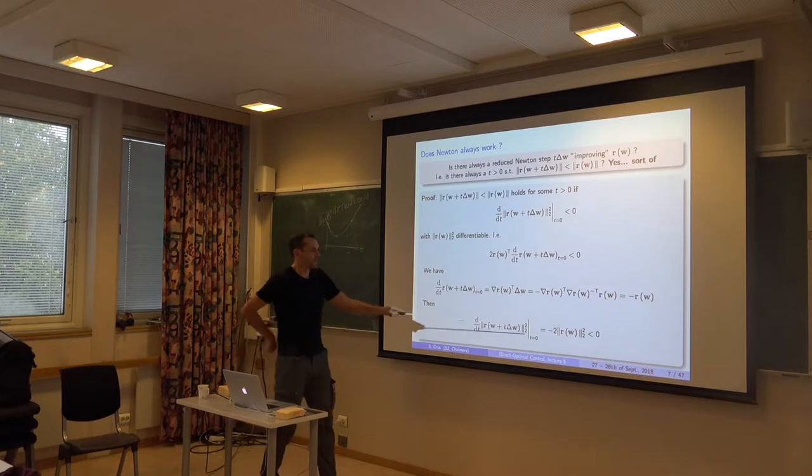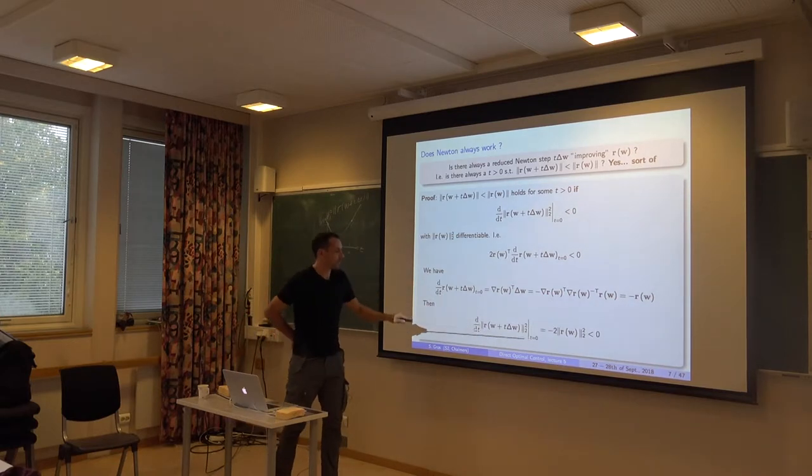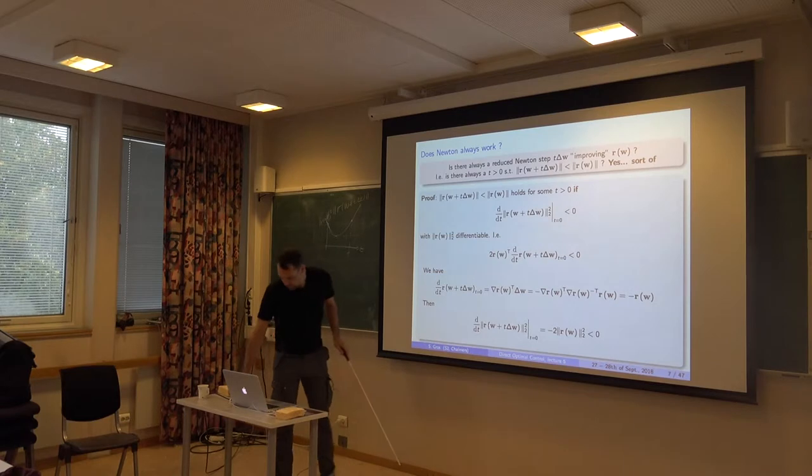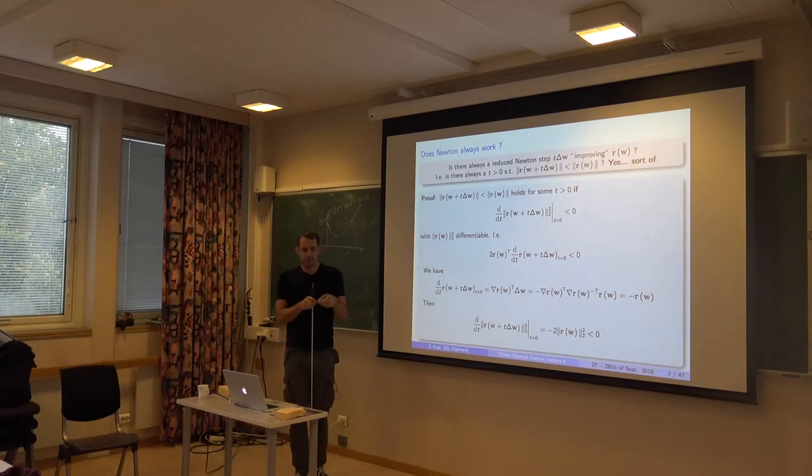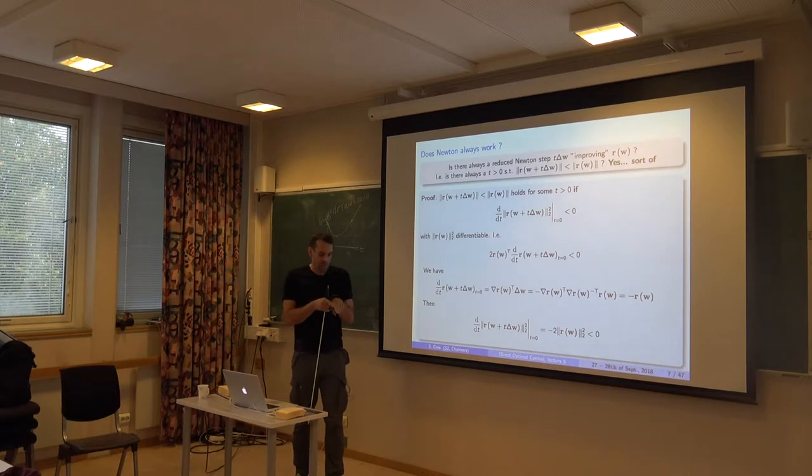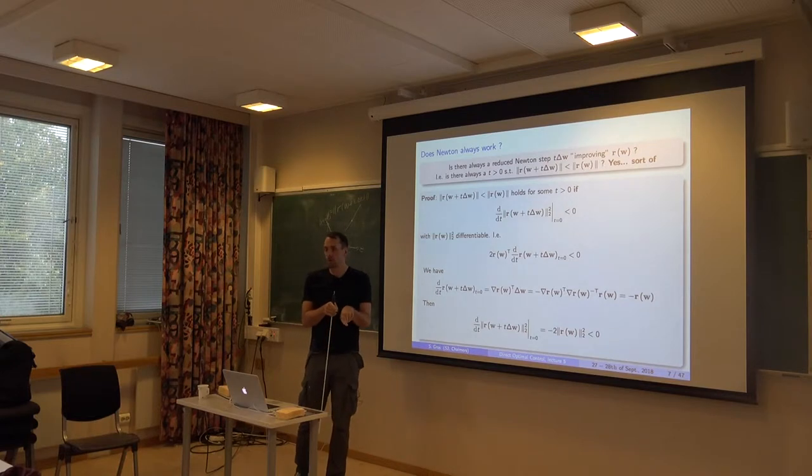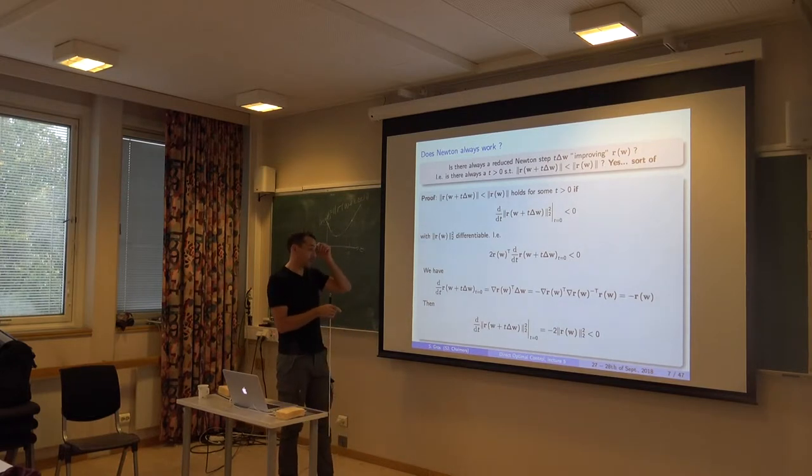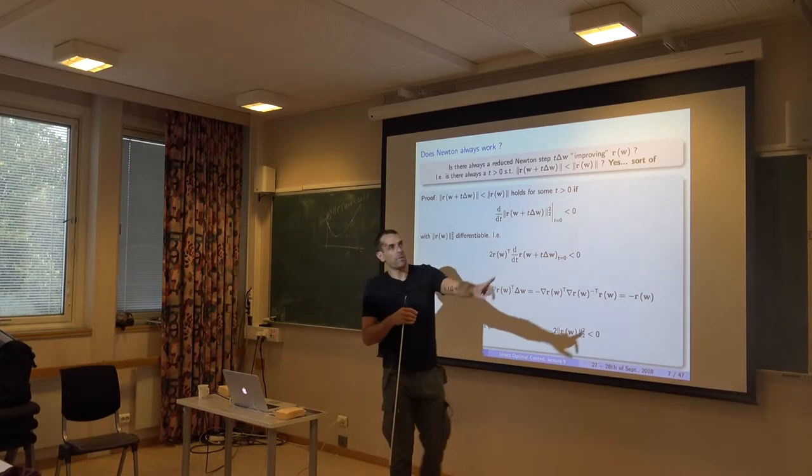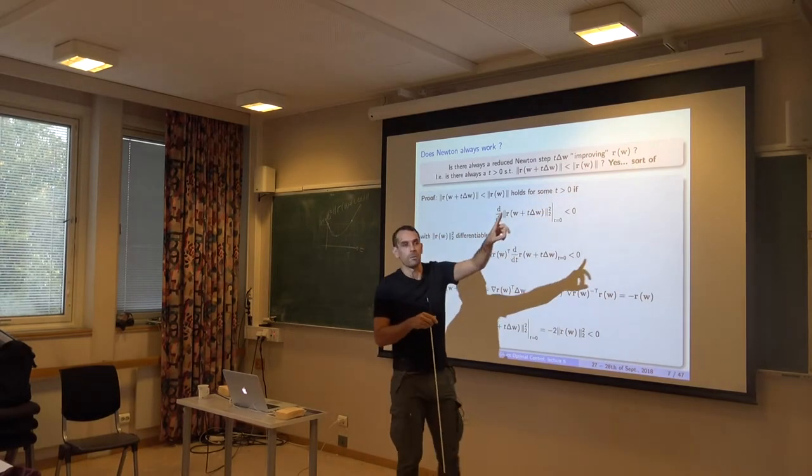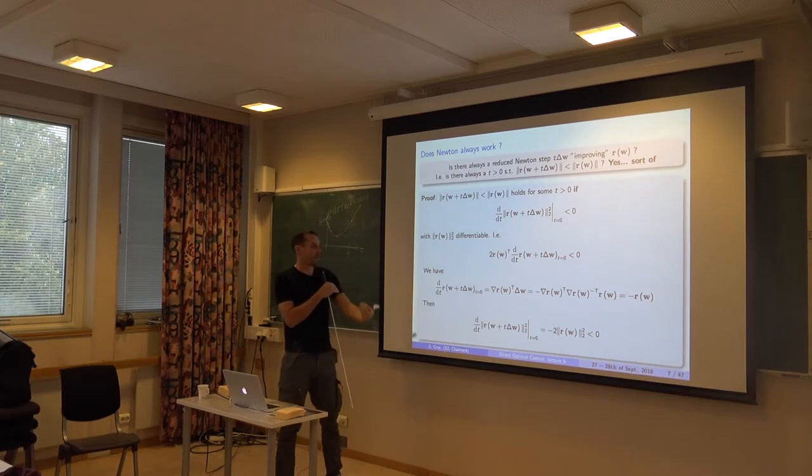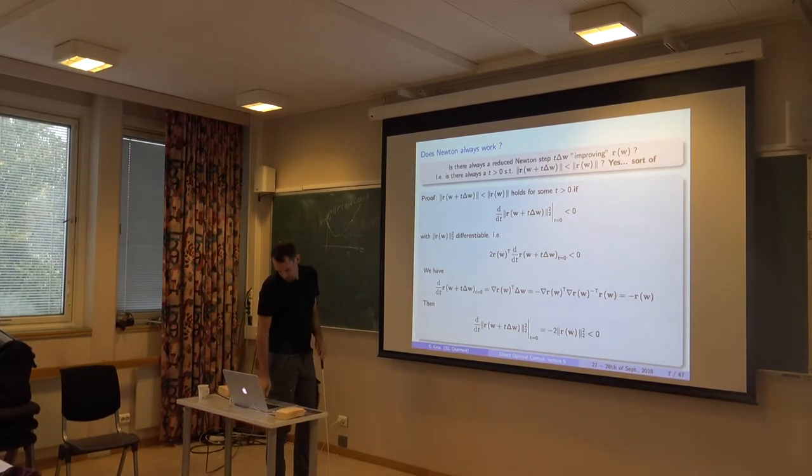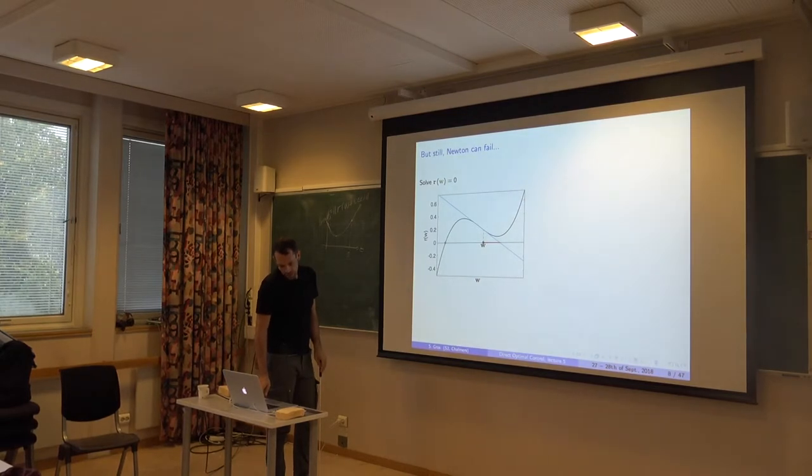And then you can use this construction. So essentially, we are looking at this derivative build this way. The delta W is given by the Newton step. We have said essentially from before. And that's the Jacobian minus one of R. These things simplify out. And it turns out that the gradient is the R itself. So essentially, you end up with this thing. That's the derivative of the 2 norm of this thing here at 0. That's minus the norm square of R. I.e., since that thing is positive, this gradient is always negative.